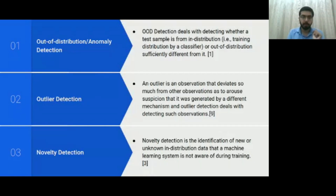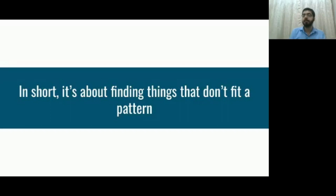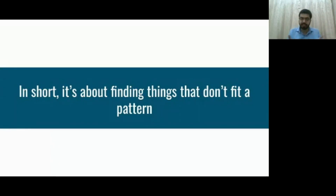In short, it's all about finding things that don't fit a pattern. Whether you're talking about OOD detection, anomaly detection, novelty detection, or outlier detection, everything converges to this one idea: you have things that fit a pattern and some points that don't, and it's about finding those data points. In the case of one-class classification specifically, it's about finding things that fit one pattern and not others, but the general essence is the same — determining if a data point fits a given pattern or not.